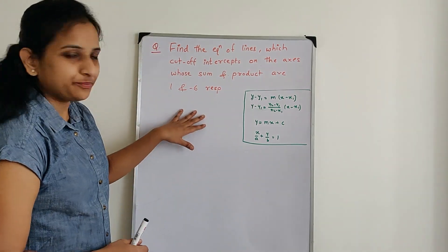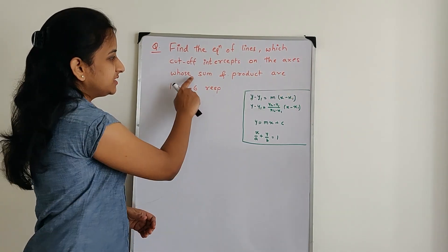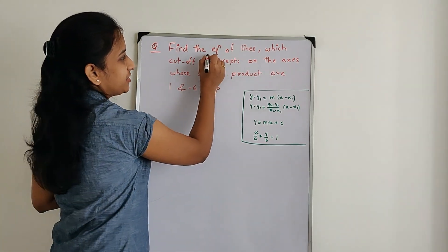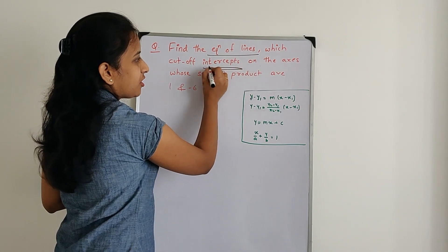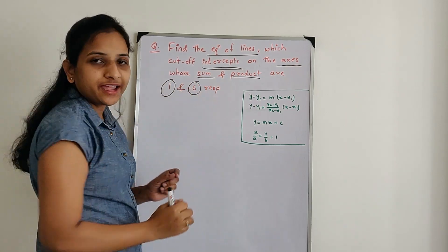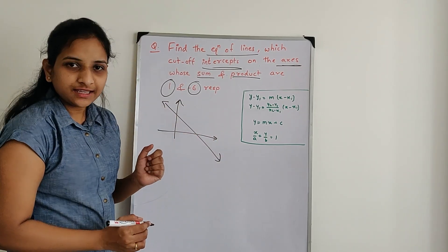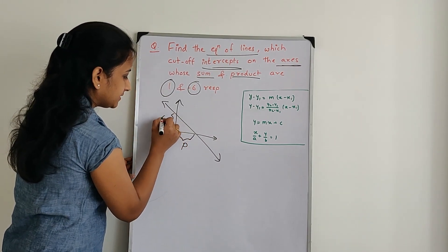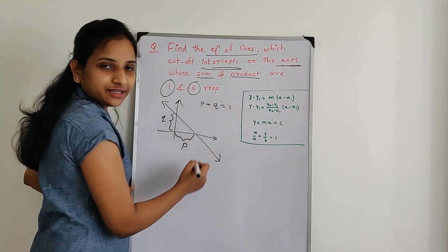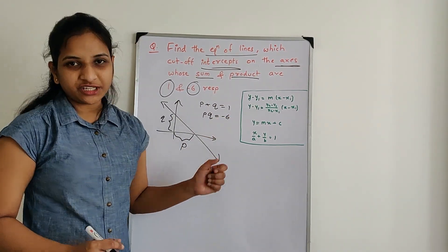Now let us solve the next problem: find the equations of lines which cut off intercepts on the axes whose sum and product are 1 and minus 6 respectively. We need to find the equation of the line. The intercepts P and Q satisfy P plus Q equal to 1 and PQ equal to minus 6. We need to find the equation of the line.